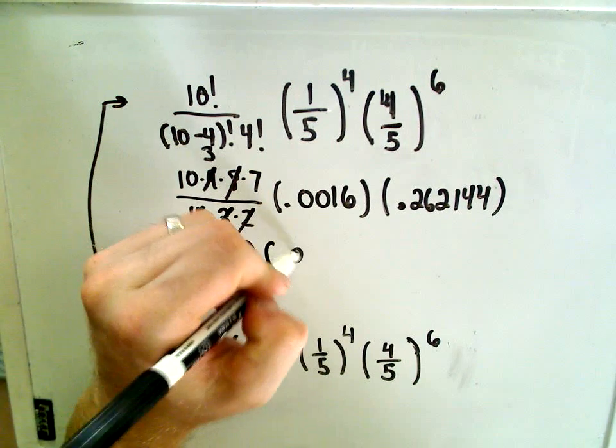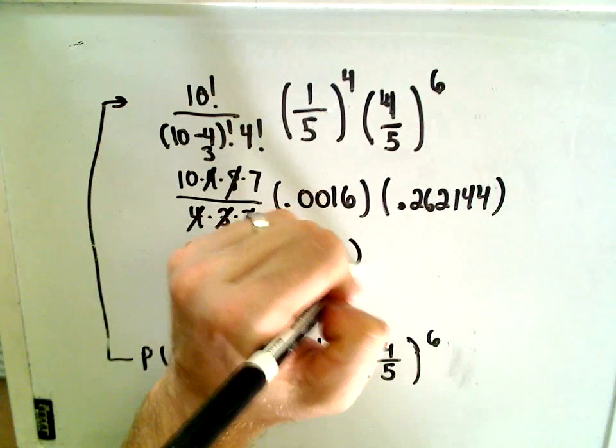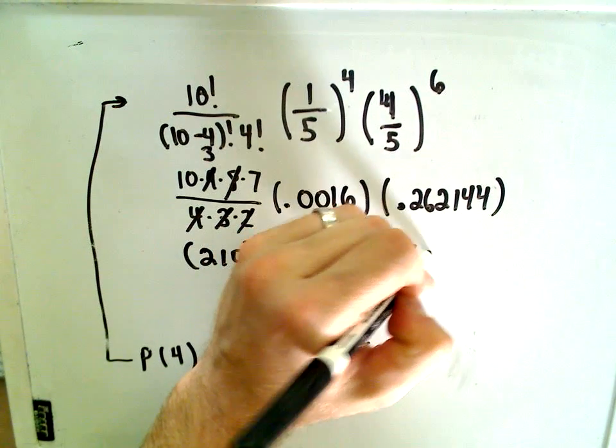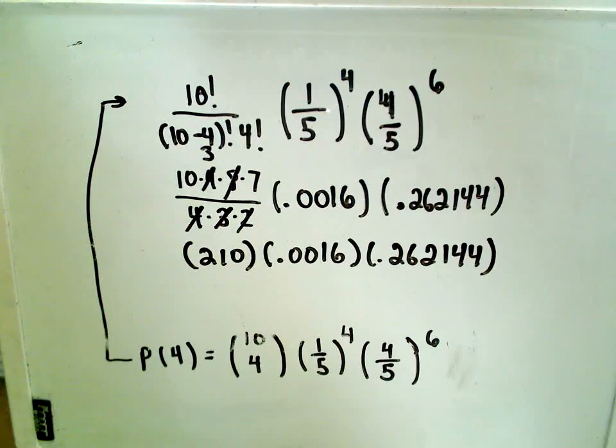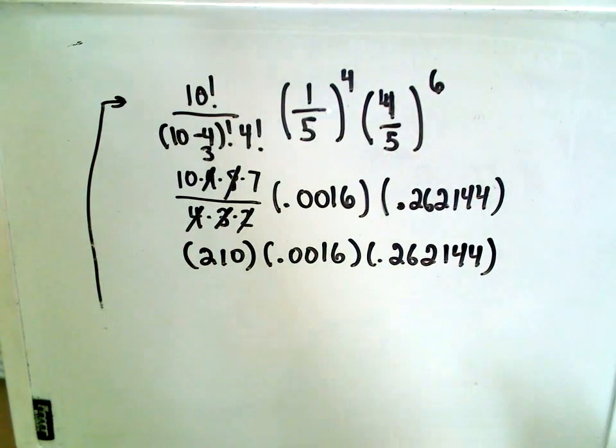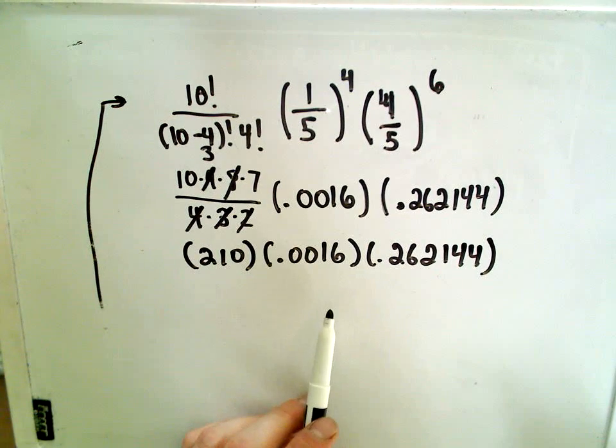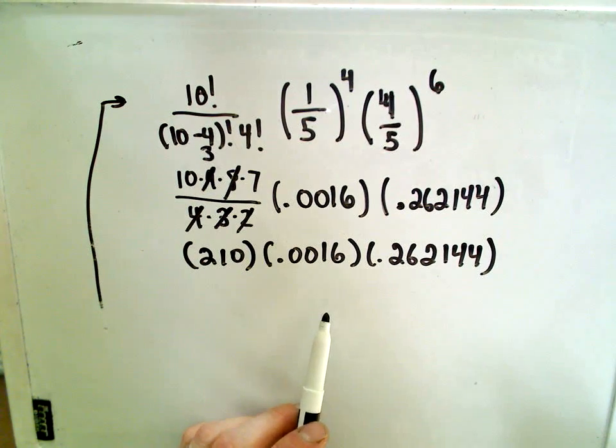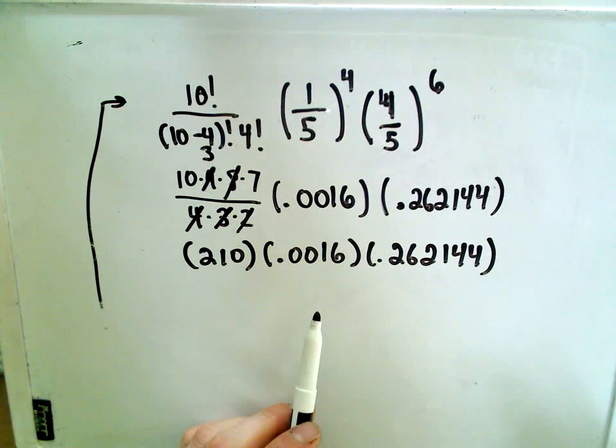And again, now we just have to multiply all of these numbers together. And, this will be the probability of you, again, answering exactly four out of ten problems correctly. So, let's see what we get. Probably, intuitively, not going to be very likely.